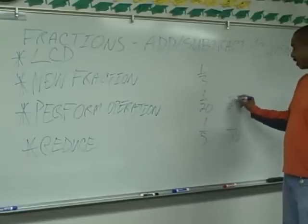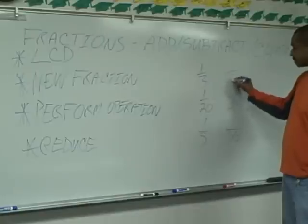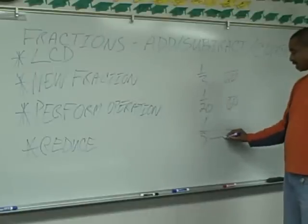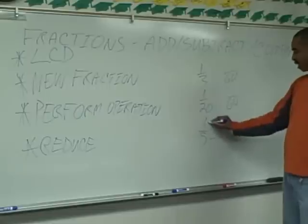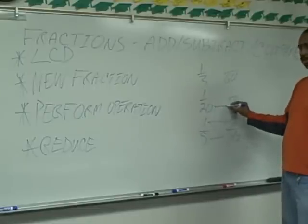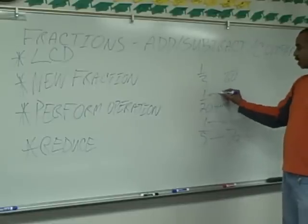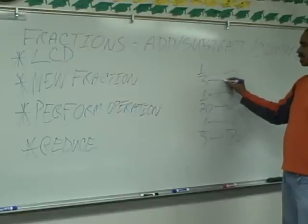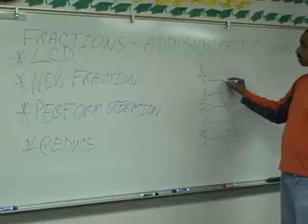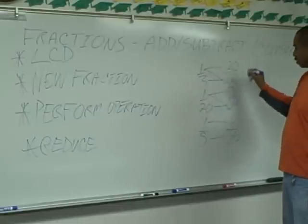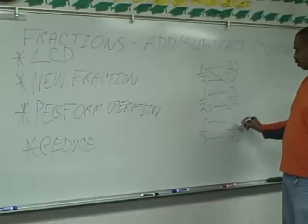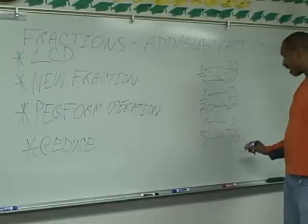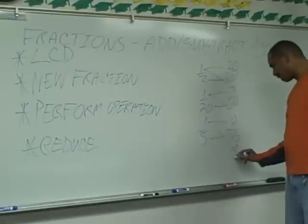So now we're on step two — we're creating our new fractions. Five goes into sixty twelve times, so twelve times one is twelve. Twenty goes into sixty three times, so three times one is three. Three goes into sixty twenty times, so twenty times one is twenty. So twenty plus three is twenty-three, plus twelve is thirty-five — giving us thirty-five over sixty.